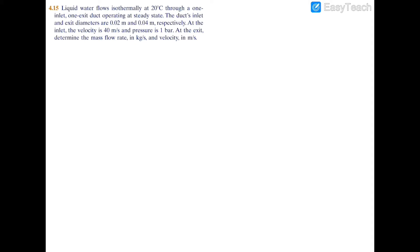Okay guys, in this problem we have water flowing through a duct, isothermal at 20 degrees at the inlet and exit. We have a different diameter of 0.02 meters at the inlet and 0.04 meters at the exit. We also have the velocity as well as the pressure at the inlet, and we're going to have to find the mass flow rate and the velocity at the exit.